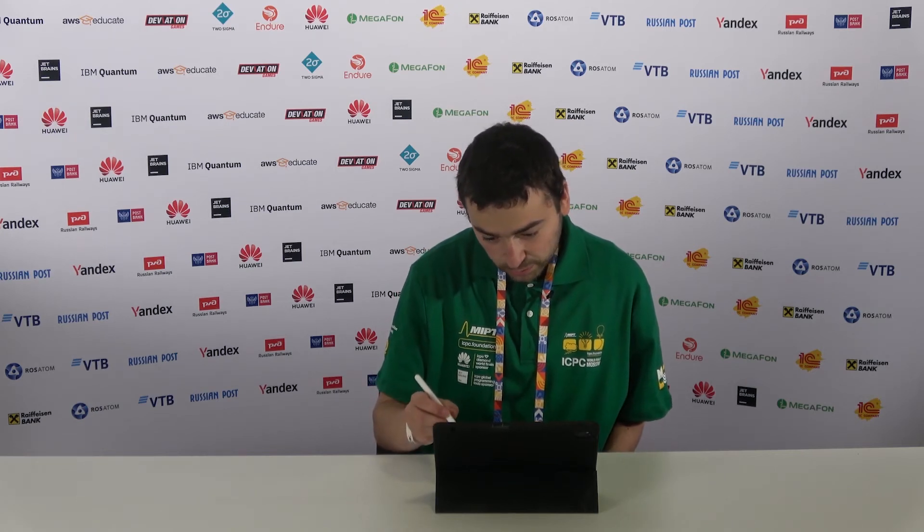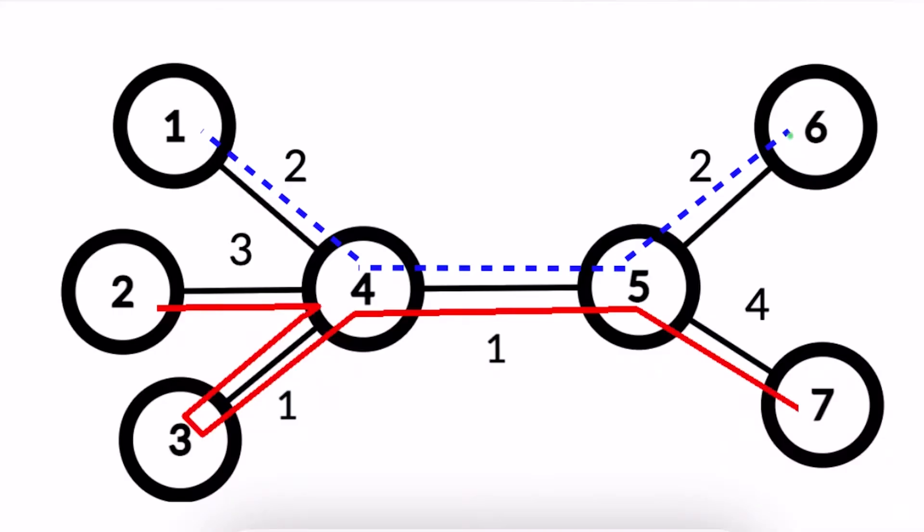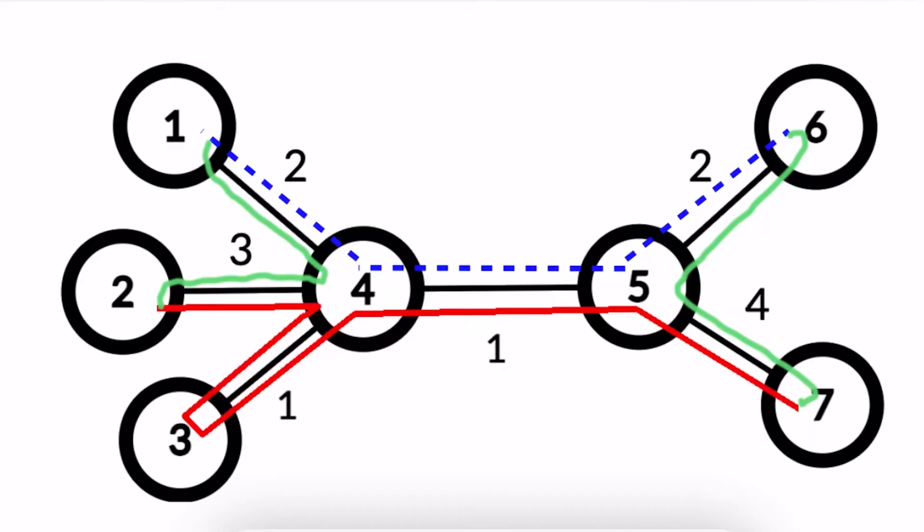One can see that given two paths, it is possible to connect their endpoints with two other paths such that these two other paths are simple and they don't have any edges in common. Also, all these four paths together form a single cycle such that it passes through each edge at least twice.